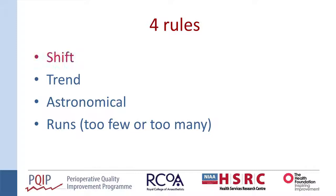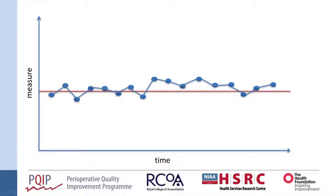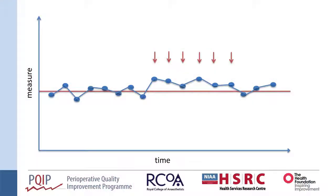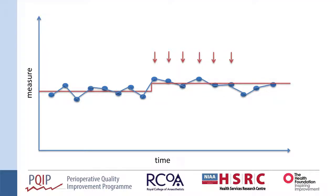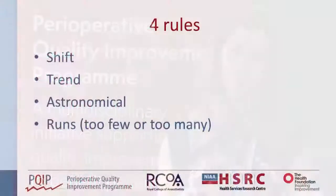The first rule is Shift. A shift happens when you have too much data grouped above or below the median line. If you have six points sitting above or below your median line, that's highly unlikely to happen by random chance — something's going on. This is a non-random pattern. A shift is six points above or six points below your median line, and this sometimes means you might have to recalculate your median line.